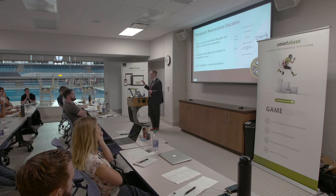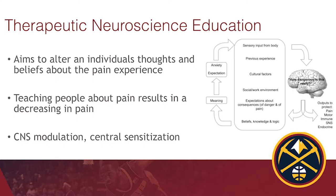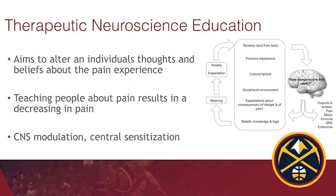Therapeutic neuroscience education is simply: teach people about pain and they feel better. It's CNS modulation — it decreases the threat level on the system by people understanding what's happening with their body. As we change their expectations, beliefs, and knowledge, the output — the pain, the motor output, the down-regulation — all changes with it. The language we use with patients is also really important, and there's been a huge push in the research on this recently.